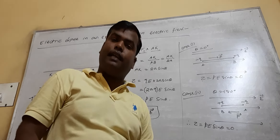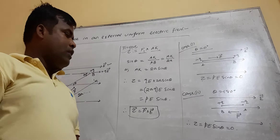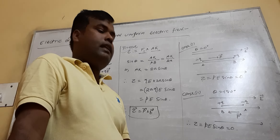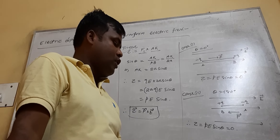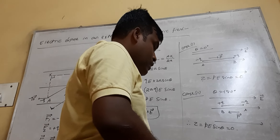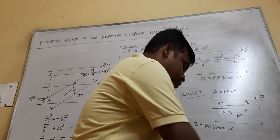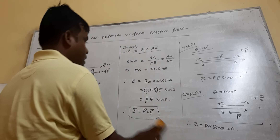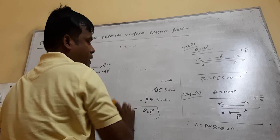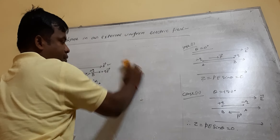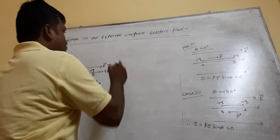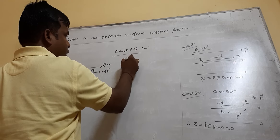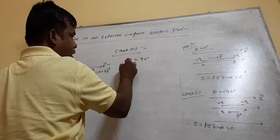Case 2: when theta equals 180 degrees, meaning the dipole moment is antiparallel to the electric field. You place the electric dipole with minus Q on the right and plus Q on the left. The direction of the dipole moment vector is from right to left, while the electric field is from left to right, so the angle is 180 degrees. Tau equals PE sin theta. When theta equals 180 degrees, sin 180 degrees equals zero, so tau equals zero.